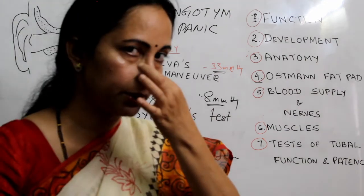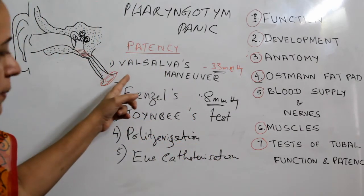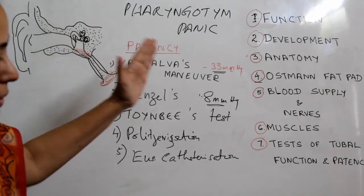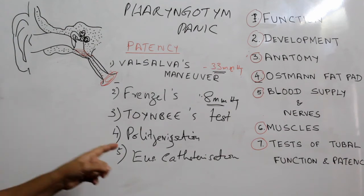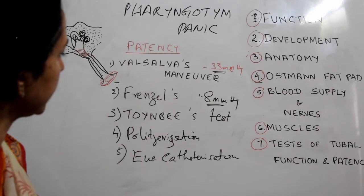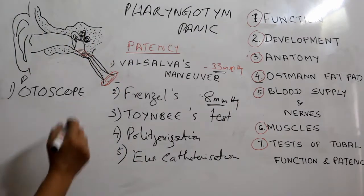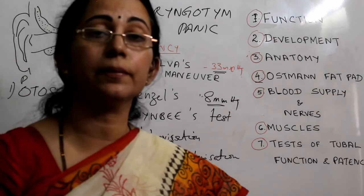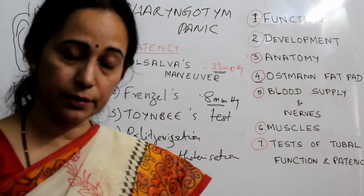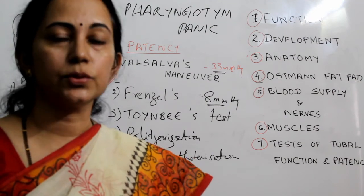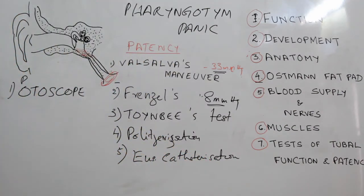The Toynbee test involves closing the nostril and asking the patient to swallow. A negative pressure is created and the tympanic membrane moves inwards. Politzerization and Eustachian catheterization are also done for patency testing but are rarely performed nowadays. A retracted tympanic membrane on pneumatic otoscopy is the hallmark of Eustachian tube dysfunction.